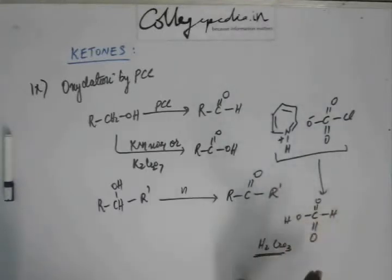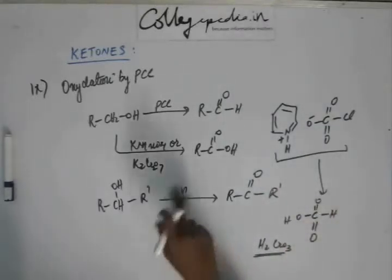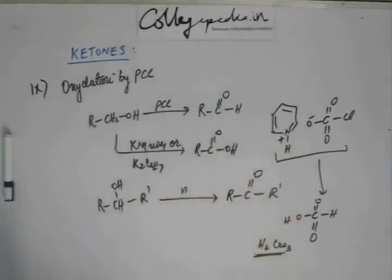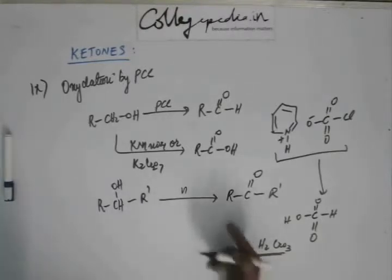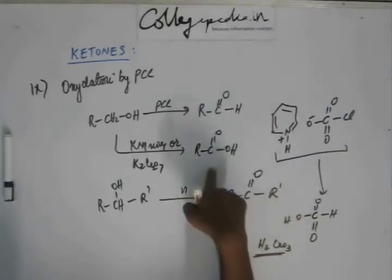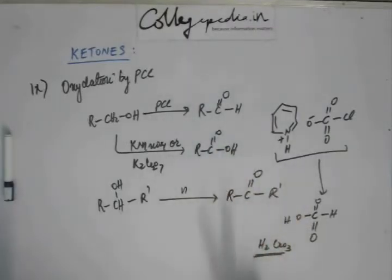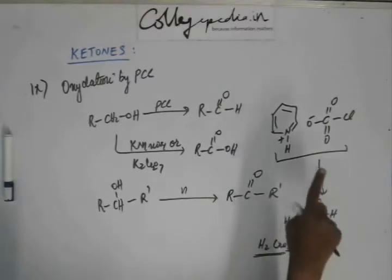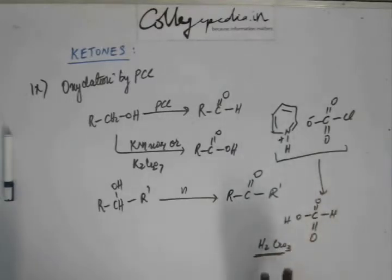So, the chromate part has been reduced because two of the hydrogen has been added on it. So, this is a reduction of pyridinium chlorochromate and alcohol will be oxidized. So, alcohols are getting oxidized and pyridinium chlorochromate are getting reduced.